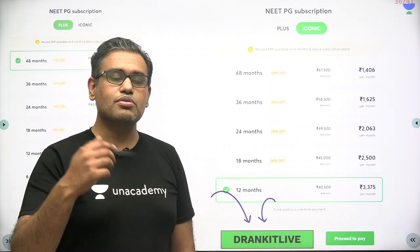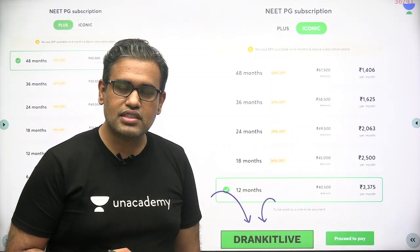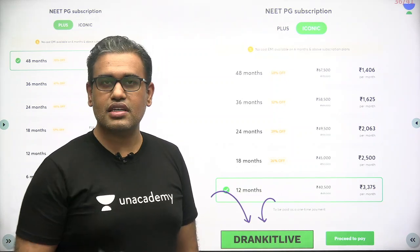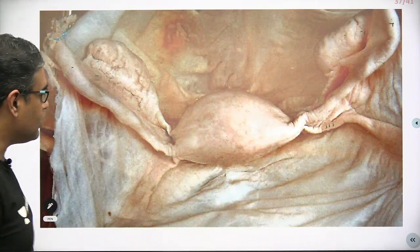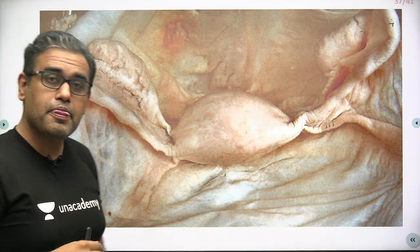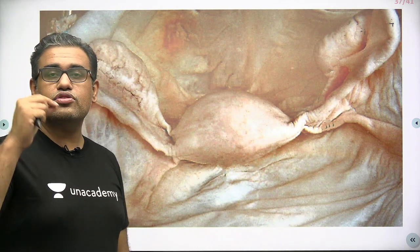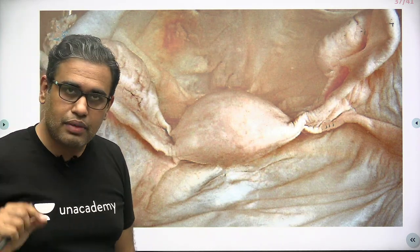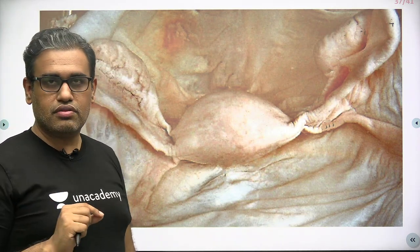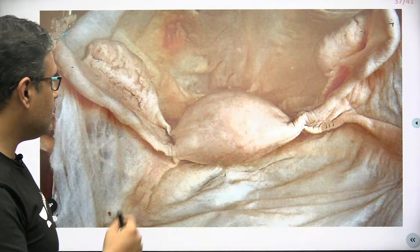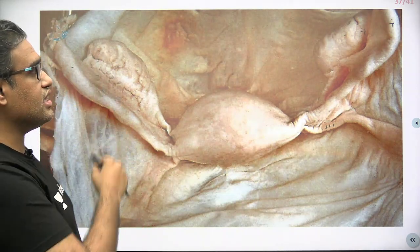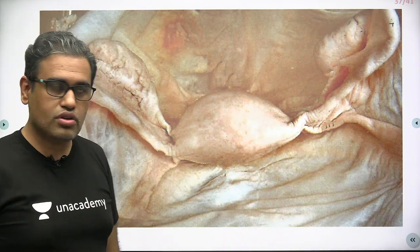So let us come to our session — an image session of Annotomy — and here is the image. What is this image over here? This is the image from the female pelvis, and you are looking at the superior view.